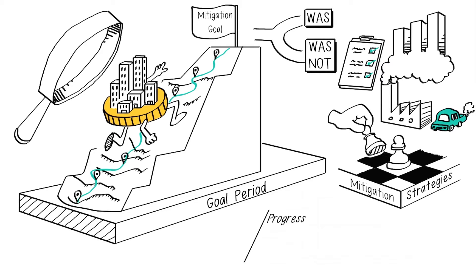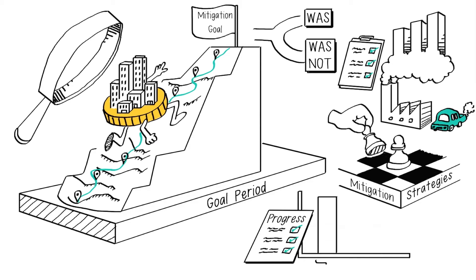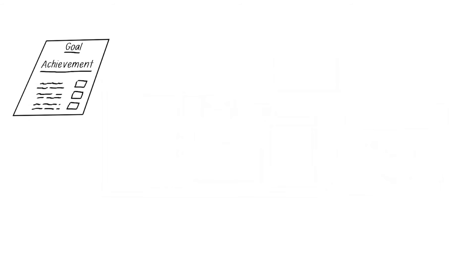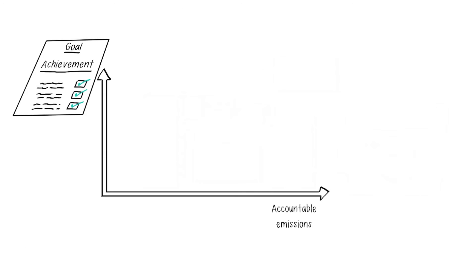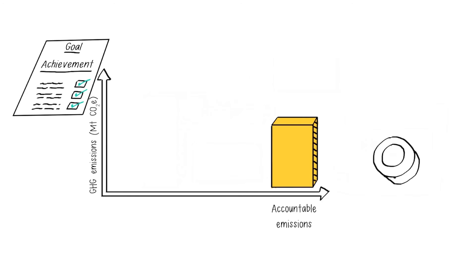In assessing progress during the goal period, we determined the reporting year emissions or emissions intensity and compared them to the target year or period's allowable emissions or allowable emissions intensity. In assessing goal achievement, we determined the accountable emissions — that is, the quantity of emissions and removals that are applied to achieving the goal.